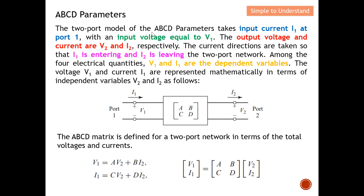The two-port model of the ABCD parameters takes input current I1 at port 1. Port 1 will be the input and port 2 will be the output. The input current is I1 with an input voltage V1, while the output voltage and current are V2 and I2 respectively.